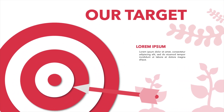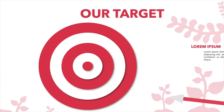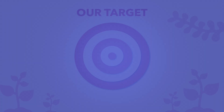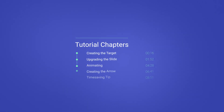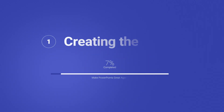In today's tutorial, we're learning how to make an animated target in PowerPoint from scratch, including all the animations. The tutorial chapters are: first creating the target, upgrading the slide with the background, animating it, creating the arrow, and there's a time-saving tip at the end.